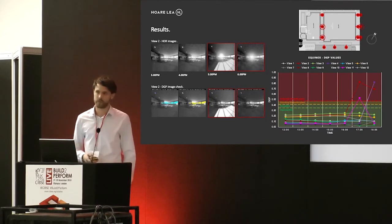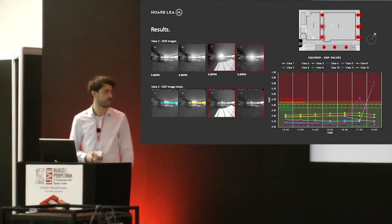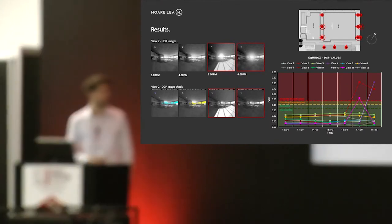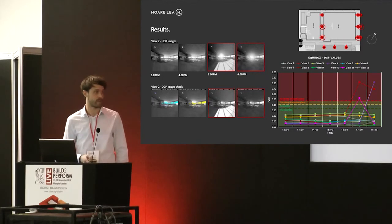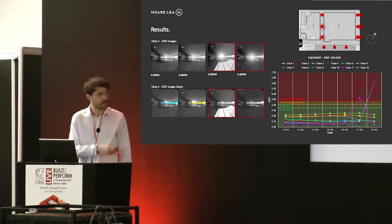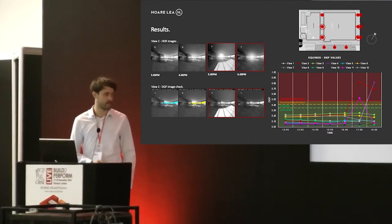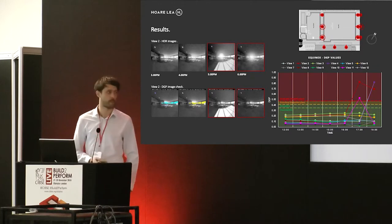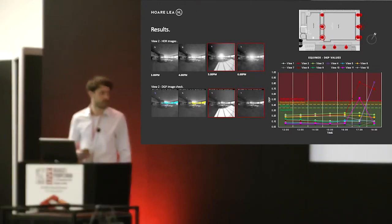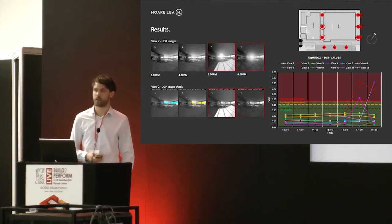Here's an example of view position 2. You can see from 5 and 6 p.m. it is receiving quite severe direct glare, and this is how we presented some of the results — with the DGP values on the y-axis, time on the x-axis, and the colors representing each viewpoint. Once we had all this data we were able to fully understand how often there was a problem and what we could do to mitigate it.